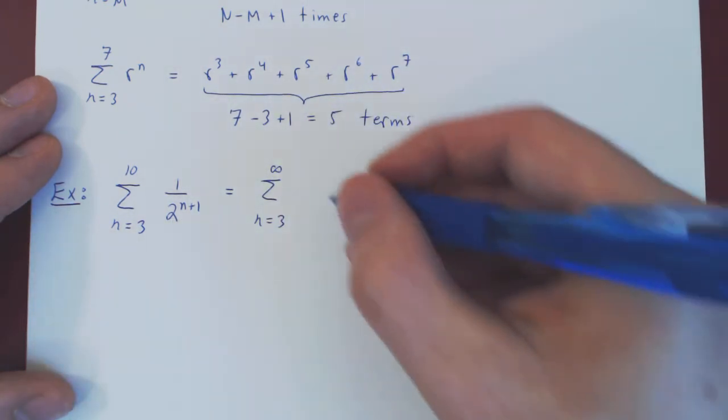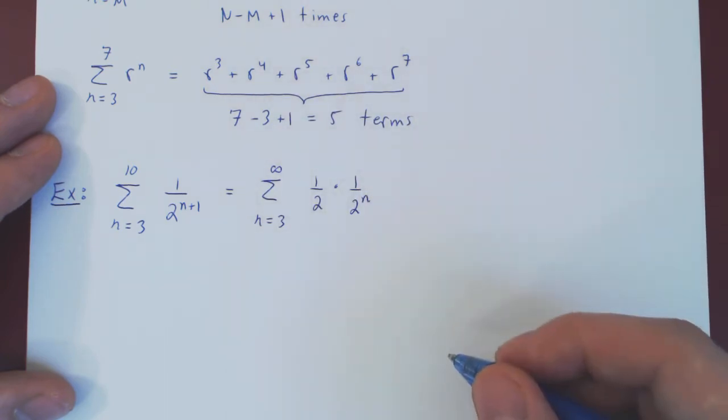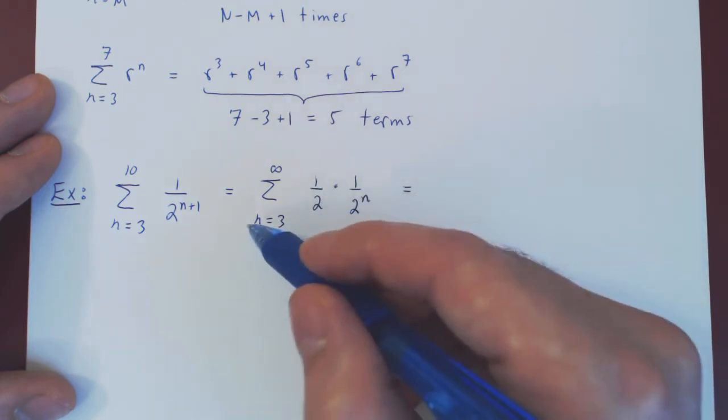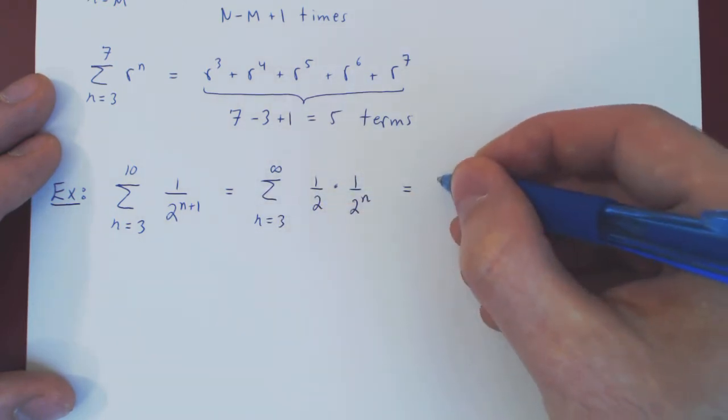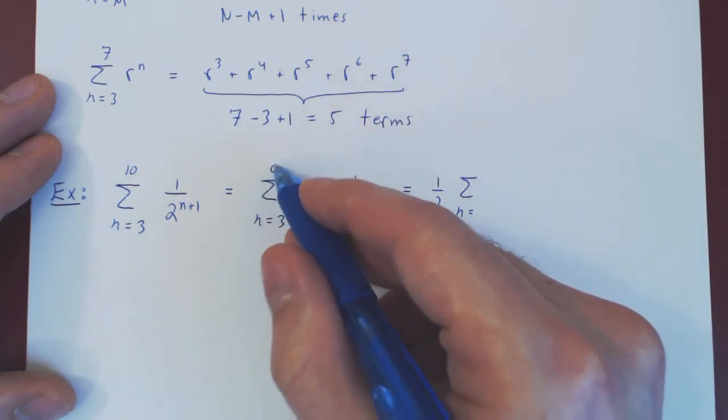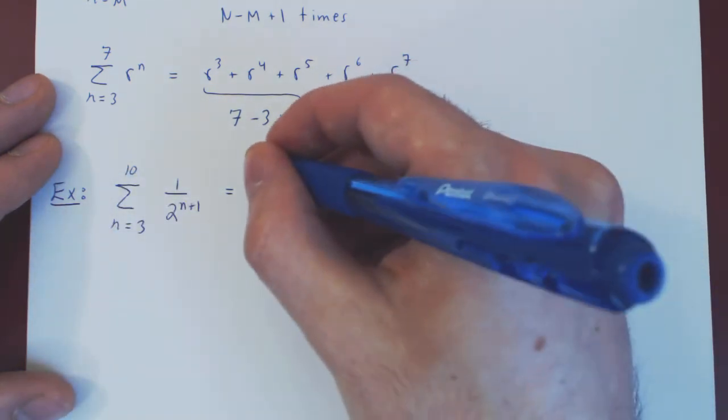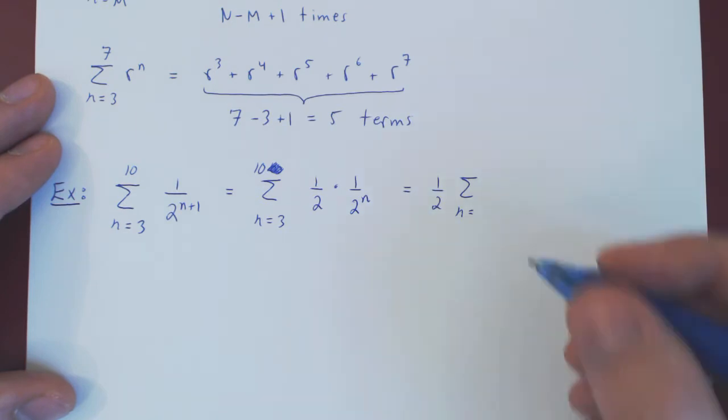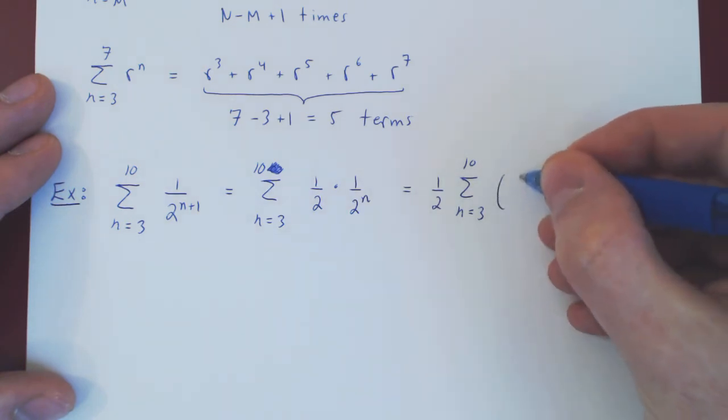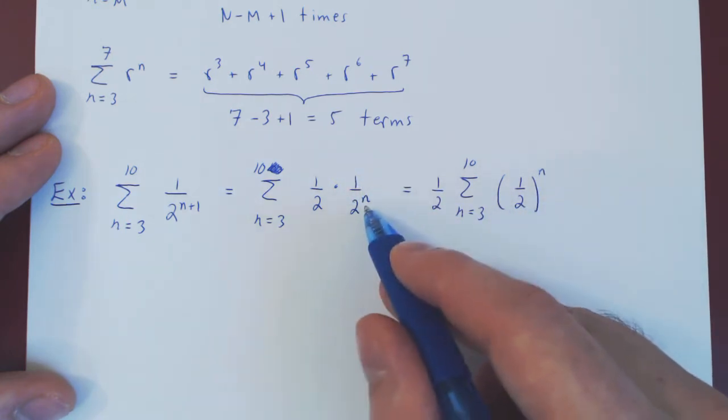So we will just split these two up. This is 1 over 2 times 1 over 2 to the n, first step. The 1 half is a constant multiple with respect to n, so we can factor it outside. So we have 1 half times the sum from 3, sorry, not up to infinity but up to 10, from 3 to 10, and 1 to the n is always 1, so this is simply 1 over 2 to the n. 1 to the n is 1, 2 to the n is 2 to the n.